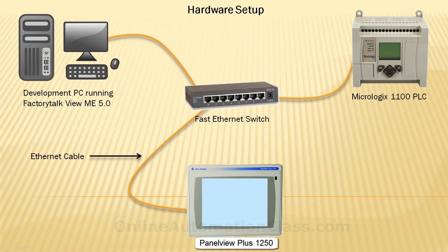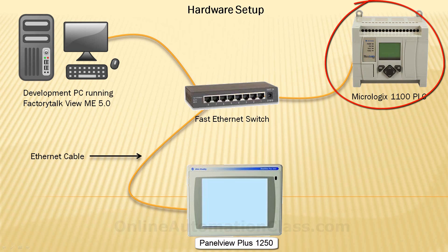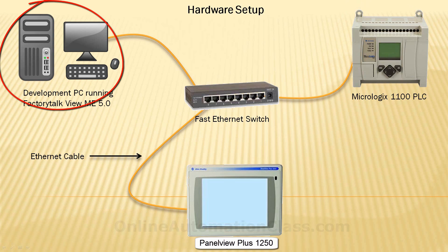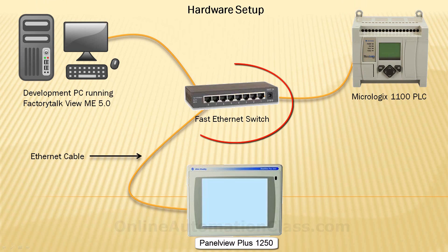In this training course, the following hardware will be used to demonstrate Factory Talk View Machine Edition 5.0: an Allen-Bradley PanelView Plus 1250, an Allen-Bradley MicroLogix 1100 PLC, a PC running Factory Talk View Machine Edition 5.0, and an Ethernet switch. The PC, the PanelView Plus 1250, and the PLC are connected together using the Ethernet switch. An HMI application will be developed so that it can interact with the MicroLogix 1100 PLC.